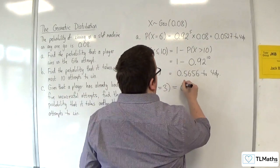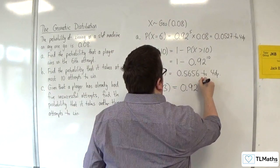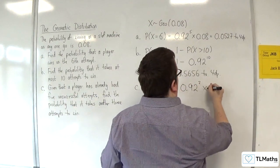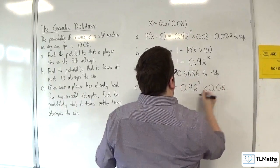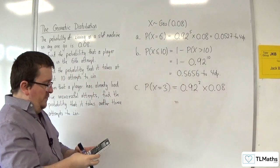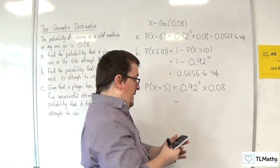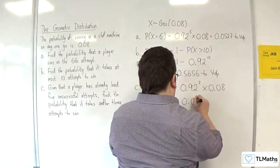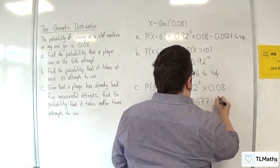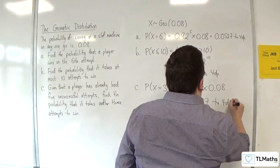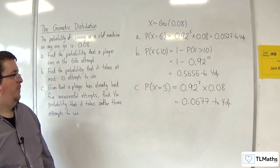So, this would be 0.92 to the power of 2, so fail twice, and then win. So, 0.92 squared times by 0.08, and we get 0.0677 to 4 decimal places.